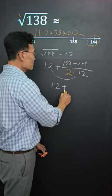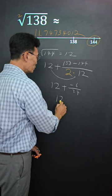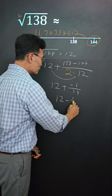And we get 12 plus negative 6 over 24, or 12 minus 1 over 4.